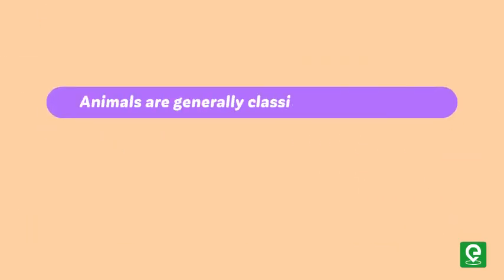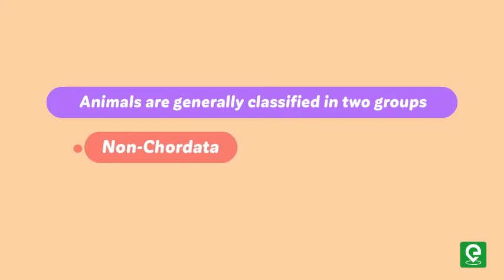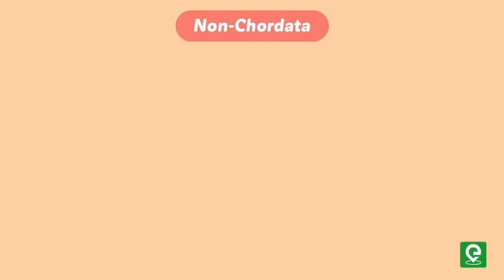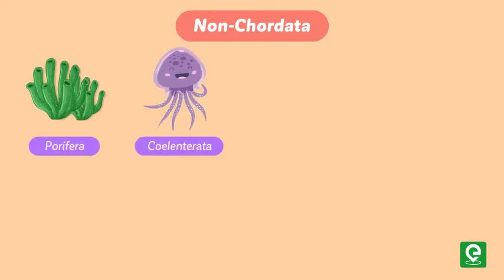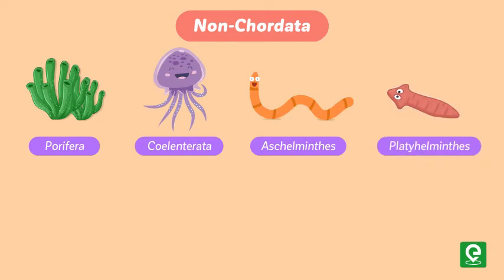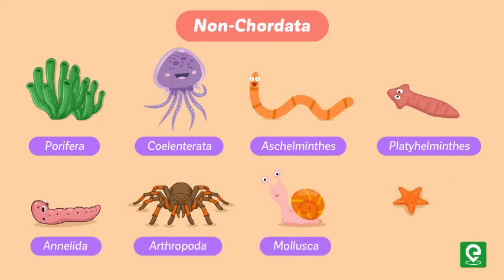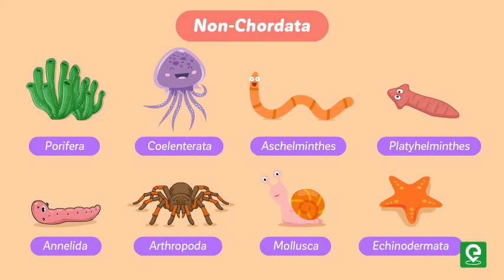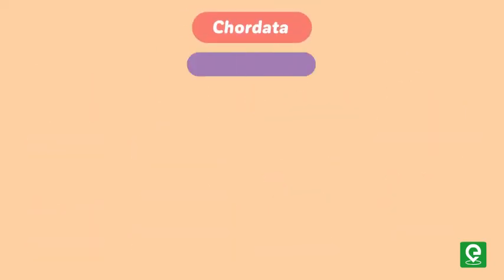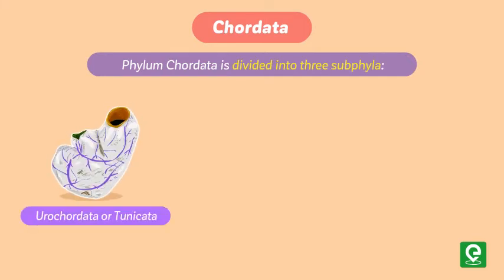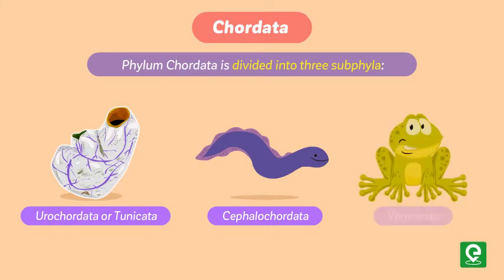Animals are generally classified into two groups: non-chordates and chordates. Non-chordates include different phyla: porifera, cnidaria, aschelminthes, platyhelminthes, annelida, arthropoda, mollusca, and echinodermata. Phylum chordata is divided into three sub-phyla: urochordata (or tunicata), cephalochordata, and vertebrata.